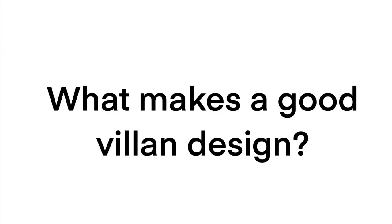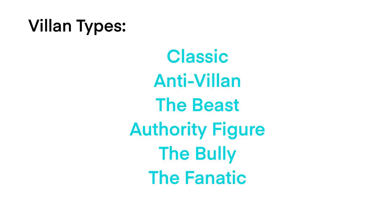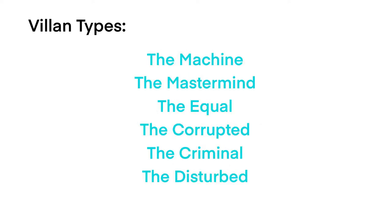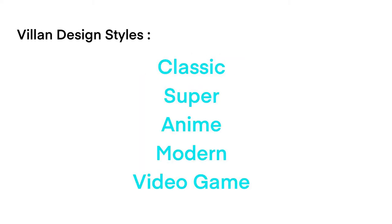Hey everyone, today we're going to be discussing how to make a villain character design that gives your audience context on their purpose in your story. In every TV, movie, show, or video game, the character design for the villain is guided by the villain's archetype. These archetypes are mainly used to guide the villain's actions and purpose in the story, and there are five styles that these archetypes fall into.